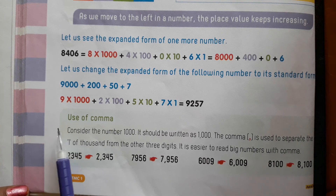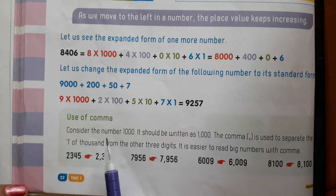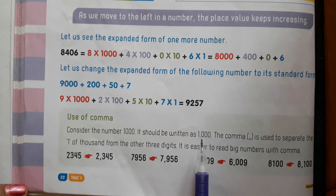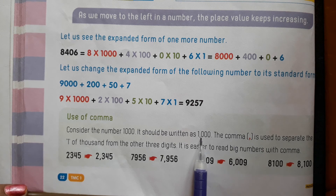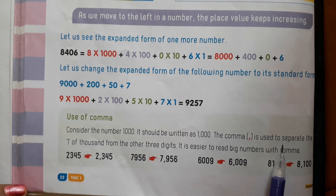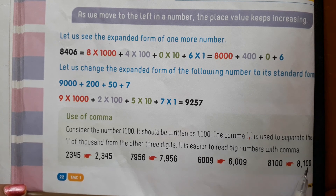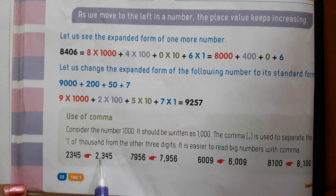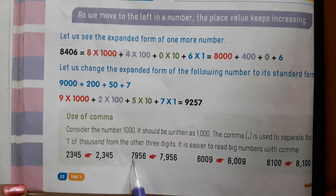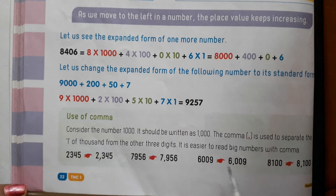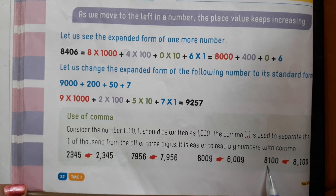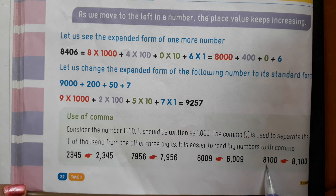Look here — use a comma after 1000. Consider the number 1000: it should be written as 1 comma then 3 zeros — 1,000. The comma is used to separate the 1 of 1000 from the other 3 zeros. It is easier to read big numbers with a comma. For example: 2,345 — 2 after comma; 7,XXX — 7 after comma; 6,XXX — 6 after comma. If you use a comma, it is easy to identify the number.